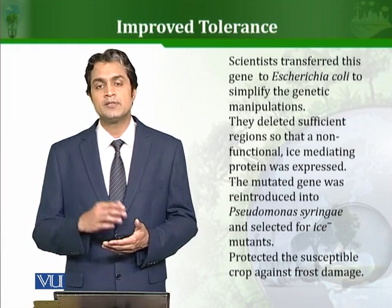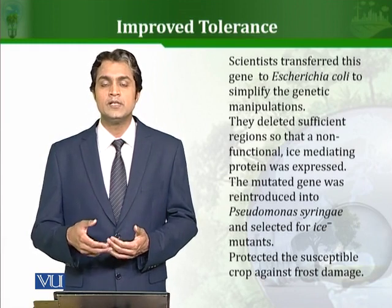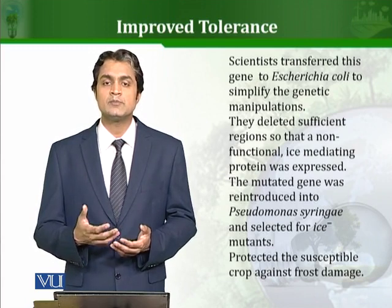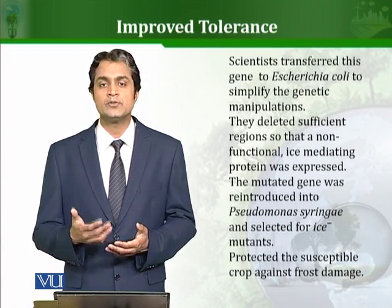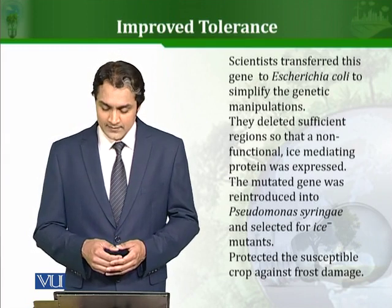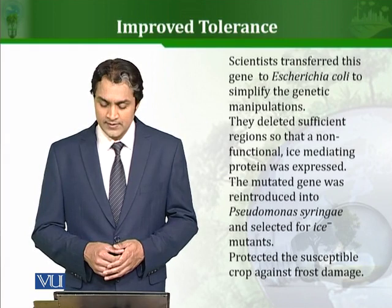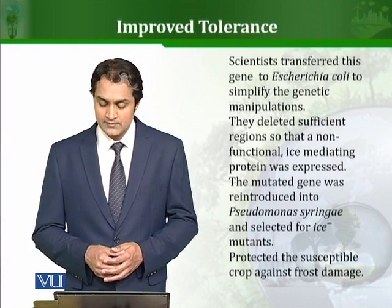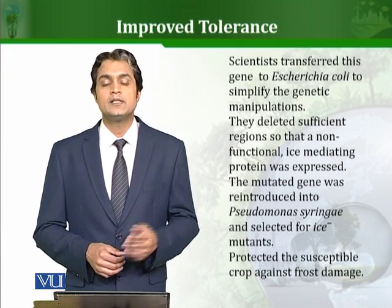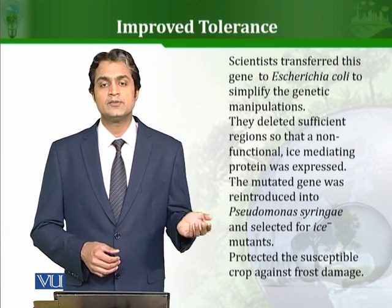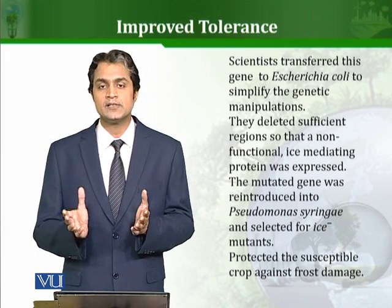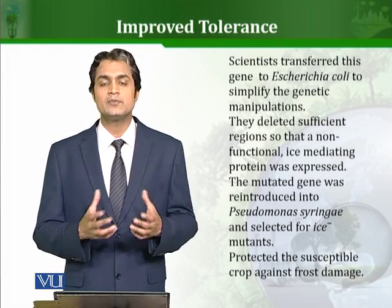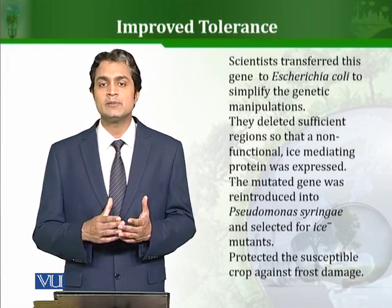In E. coli, modification is easy. Scientists deleted sufficient regions so that a non-functional ice-mediating protein was expressed. The mutated gene was reintroduced into Pseudomonas syringae and selected for ice-negative mutants. The proteins that used to form ice crystals were transferred to E. coli, a large portion was deleted, and this mutant gene — now an ice-negative gene — was transferred back into Pseudomonas. This mutant Pseudomonas no longer has the ability to form ice crystals.